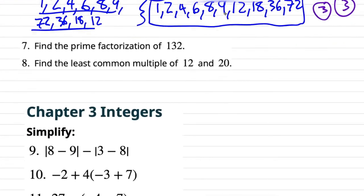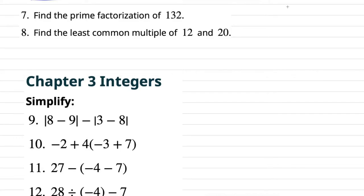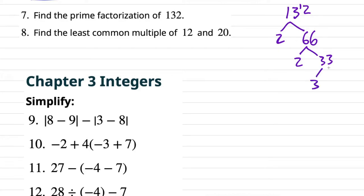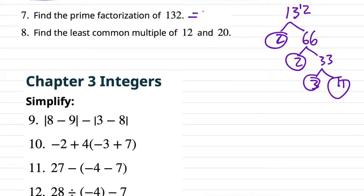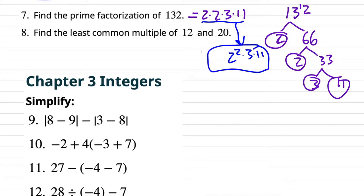Number seven: using that same concept, find the prime factorization of 132. 132 is even, so 2 goes into it. 2 into 132 gives 66. 66 is even — divisible by 2 — giving 33. 33 is odd, but divisible by 3: 3 into 33 goes 11 times. Circling the endpoints: 2 × 2 × 3 × 11. If your teacher is a stickler, this can be rewritten as 2² × 3 × 11.